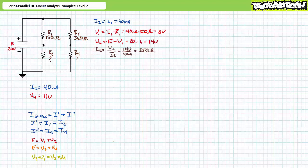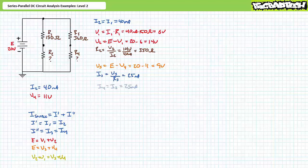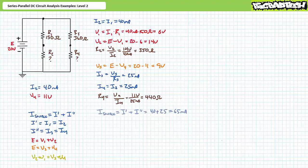Another application of Ohm's law solving for unknown R2 demonstrates that R2 is 350 ohms. I3 is 25 milliamps. Current through elements in series is the same — R3 and R4 are in series — so I3 equals I4 and they both equal 25 milliamps. Another application of Ohm's law solving for unknown resistance R4 demonstrates that R4 is 440 ohms. Using the Kirchhoff's current law equation, source current equals I single prime plus I double prime. Substituting our calculated values demonstrates that source current is 65 milliamps.